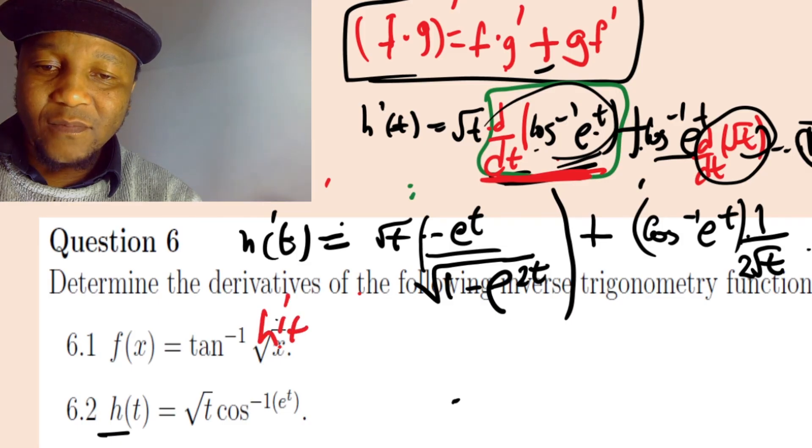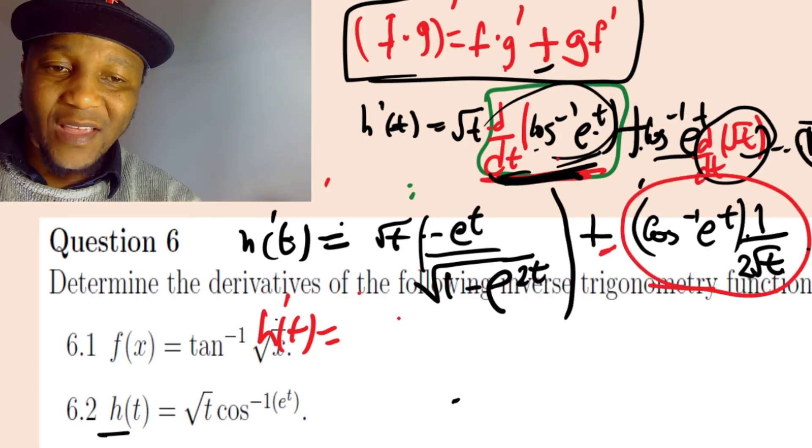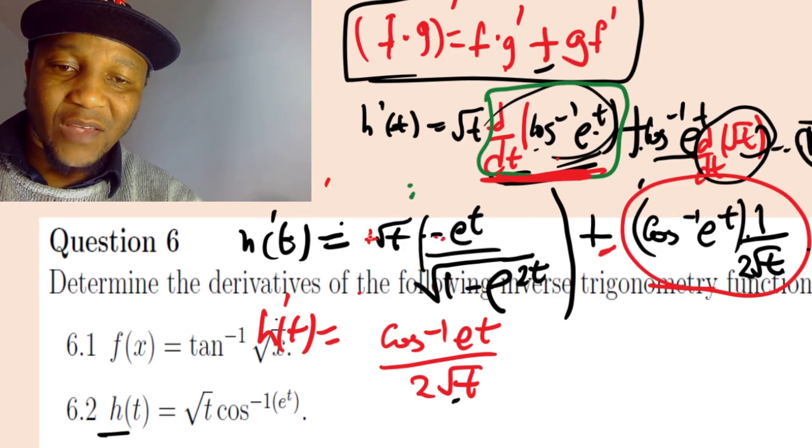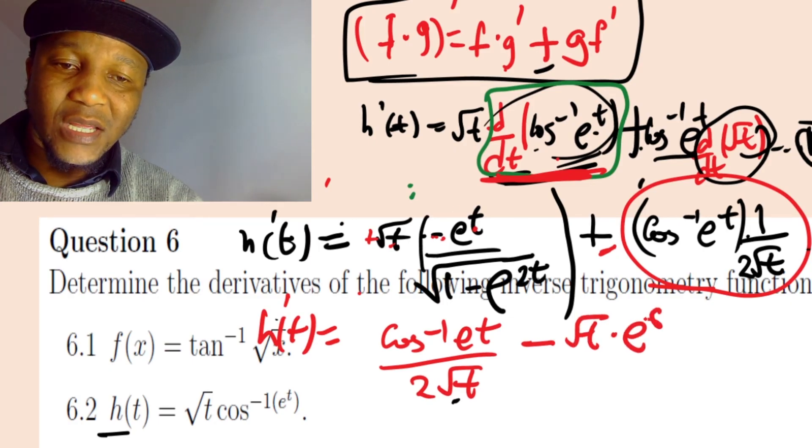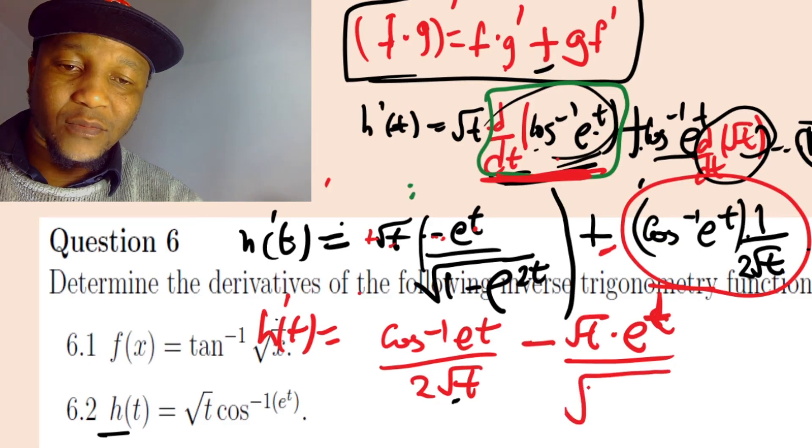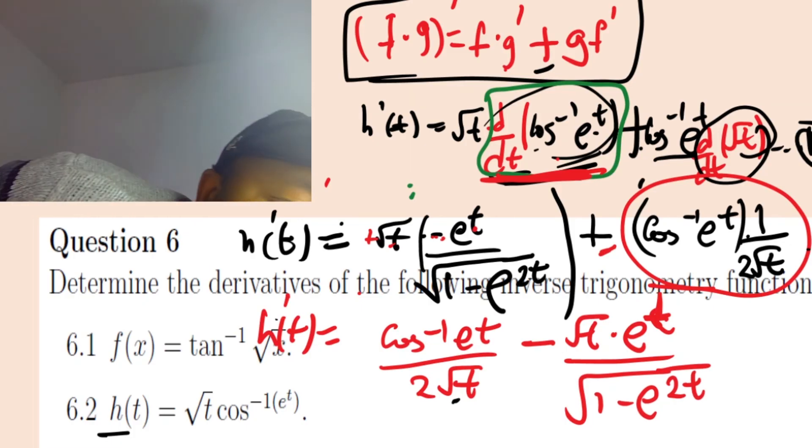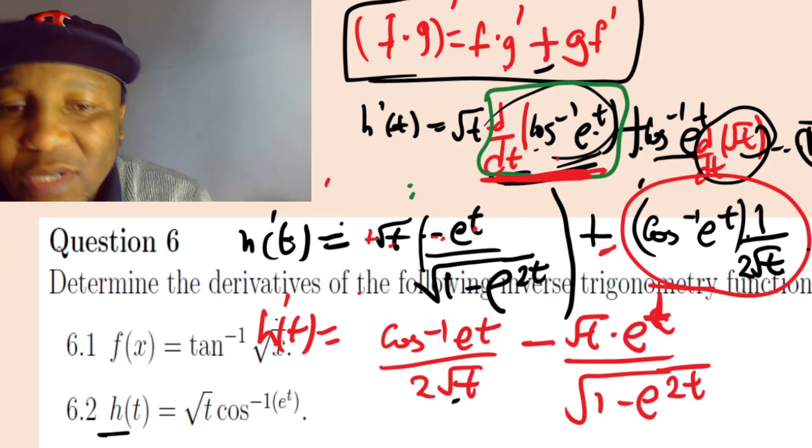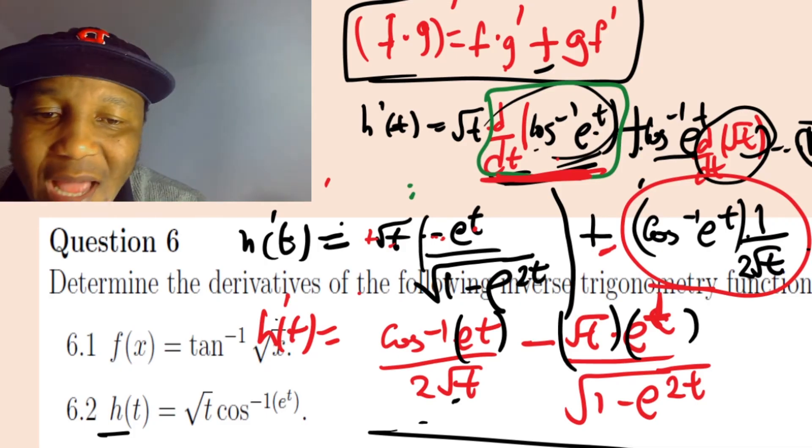Let me write the positive part first since this is positive. So h inverse of t equals cos inverse of e power t over 2 square root of t. Then negative and positive gives us negative, because the multiplication becomes negative. So minus square root of t times e to t over 1 minus e to 2t. That is the final answer for the second question.